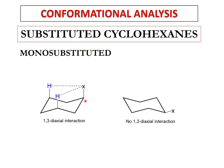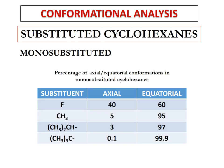To avoid the 1,3-diaxial interaction, the ring flips, and axial groups become equatorial. When X is equatorially oriented, it is less crowded and does not feel any 1,3-diaxial interaction — so there is no steric hindrance. As the bulkiness or size of substituent X increases, the percentage of it being axially oriented lowers and the chances of it being equatorially oriented increases.